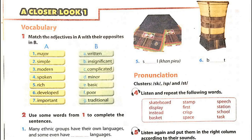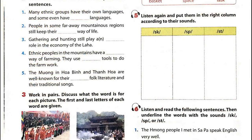Unit 3, Page 28. A Closer Look 1. Pronunciation. Activity 5: Listen again and put them in the right column according to their sounds.